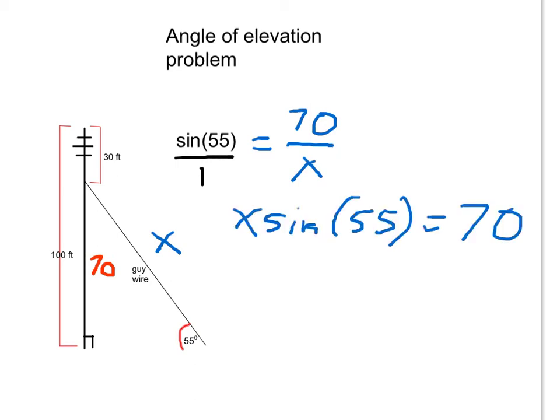Pause the video and work out that multiplication problem. Okay, when I multiplied, I got that x times the sine of 55 equals 70 times 1, so it's 70. Now I want to solve for x, so I'm going to divide both sides by the sine of 55.